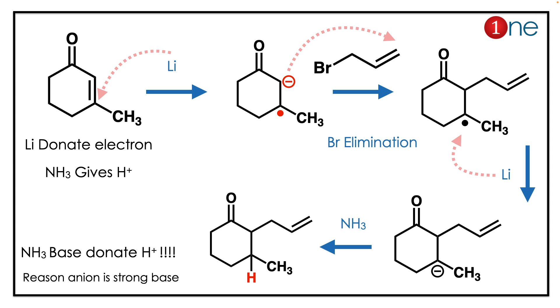This is possible because even though ammonia is a base, it can donate H⁺ since the anion formed is a strong base. The key concept to learn here is that lithium in ammonia is involved in the reduction of conjugated alkenes.